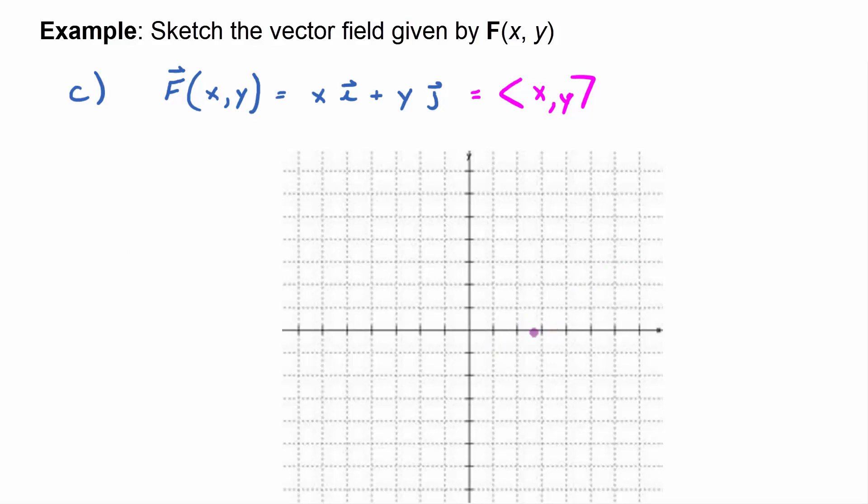So if I made the input, say, 2, 0, then the tail would be at 2, 0. The tail is the input, and I would go over 2, 1, 2, up 0, like this.